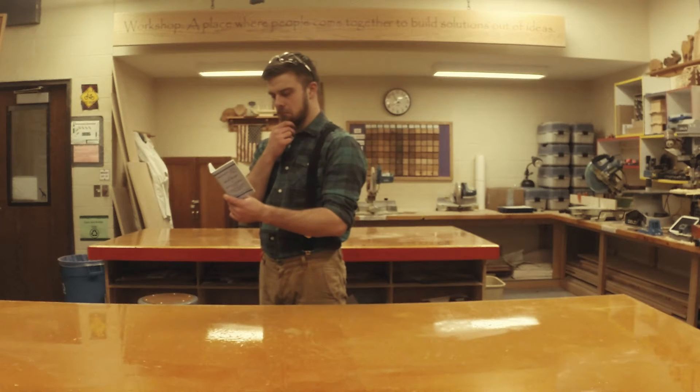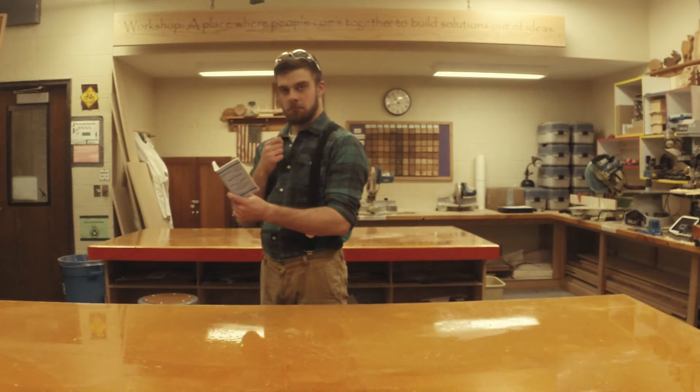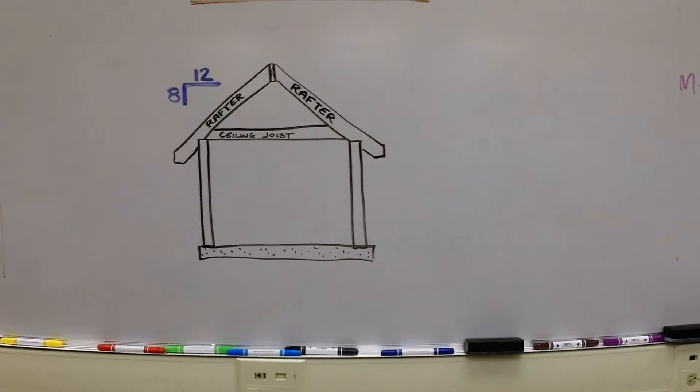Before we begin layout, let's make sure we have all the information needed to make our rafters accurately. Some things we need to know are the pitch of the roof, the distance the roof will span, the length of the eaves, and the vertical height from the top of the walls to the peak of the roof.